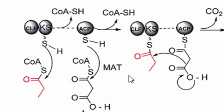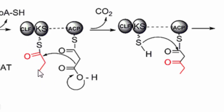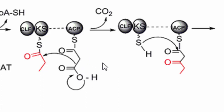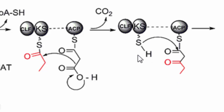In the next step, there is an acetyl group attached to the ketosynthase and a malonyl group attached to the acyl carrier protein. Claisen condensation then takes place — the acetyl group reacts with the malonyl group, releasing carbon dioxide. This Claisen condensation occurs between two esters or one ester and one carbonyl group, reacting in the middle of the chain rather than at the end, which is why it is called a Claisen condensation mechanism.